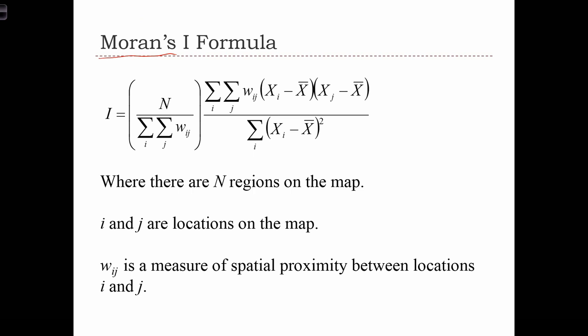As you can see, Moran's I is formulated very similarly to a correlation statistic. The major difference between Moran's I and just simple Pearson's correlation is that with Moran's I, we only have one random variable, the x variable.